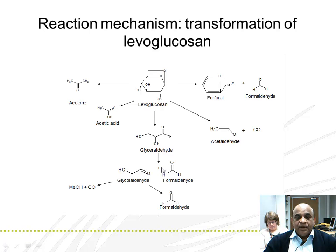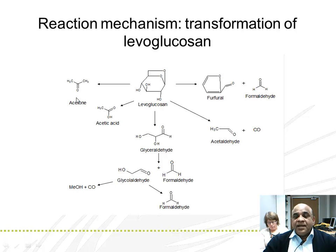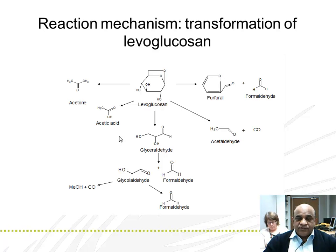Levoglucosan further goes to form glycolaldehyde, which is further transformed to formaldehyde and to other products such as methanol. Acetic acid and acetone are also formed during the transformation of levoglucosan to different products over microporous and mesoporous materials.